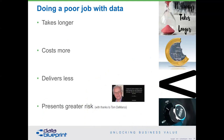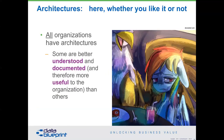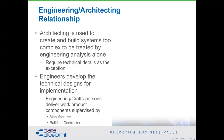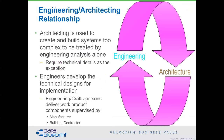Let's move on to engineering and architecture. The first thing to understand is that all organizations have architectures. At Data Blueprint, people say 'Can you come build a data architecture for me?' Our answer is yes, but you already have one — wouldn't you rather understand the one you have instead of building a brand new one? If you don't understand what you have, your architecture cannot be useful. Architecture is used to create and build systems that are too complex to be treated by engineering analysis alone. The architecture components require technical details as the exception, while data engineers develop the technical designs for implementation.